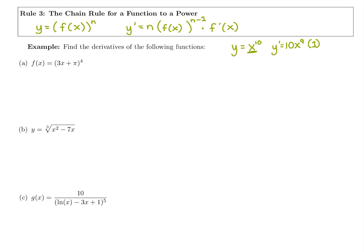For anything besides a regular x, we're not just going to bring down the power and subtract one. We bring down that power, subtract one for the new power, and also multiply by the derivative of what was inside. Product rule always has a plus, quotient rule has a minus, and chain rule always has multiplication at the end — we multiply by the derivative of the inside.